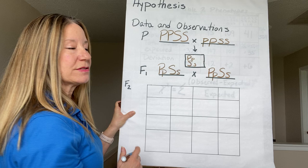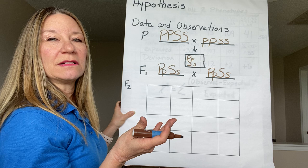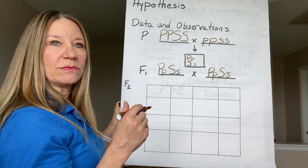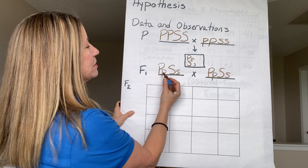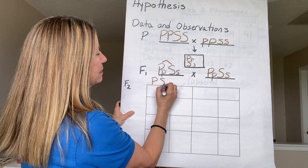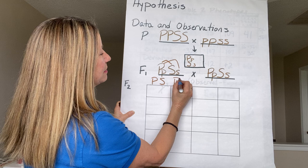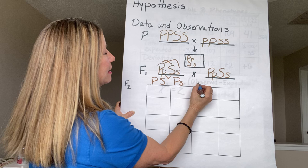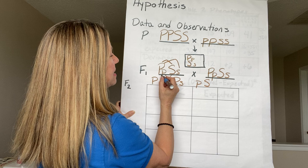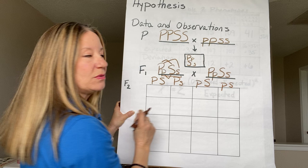In our F1 cross, we need to set up our double Punnett square. This is for 16 squares to show two traits being carried at the same time. I like to think of this like algebra where you do the FOIL method — first, outer, inner, last. So I do the first P with the first S, the outer P with the outer S, the inner P with the inner S, and the last P with the last S.